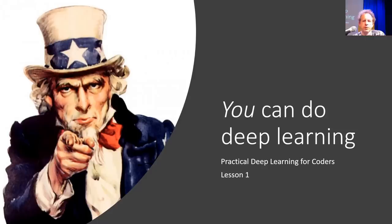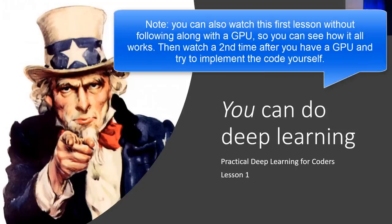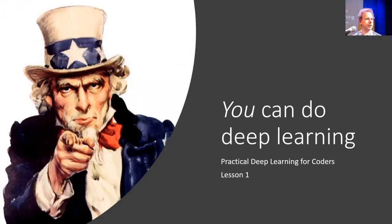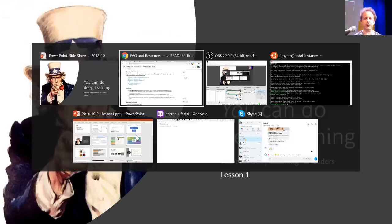Welcome to Practical Deep Learning for Coders, lesson one. It's kind of lesson two because there's a lesson zero, which covers why you need a GPU and how to get it set up. If you haven't got a GPU running yet, go back and do that, make sure that you can access a Jupyter notebook, and then you're ready to start the real lesson one.